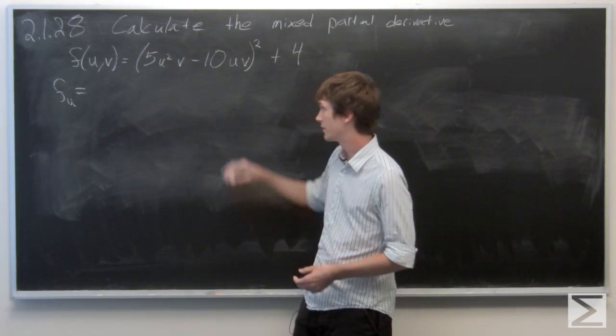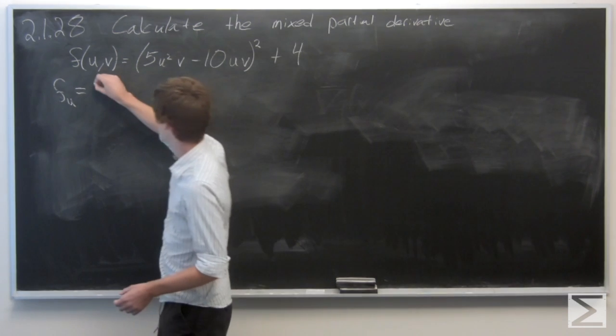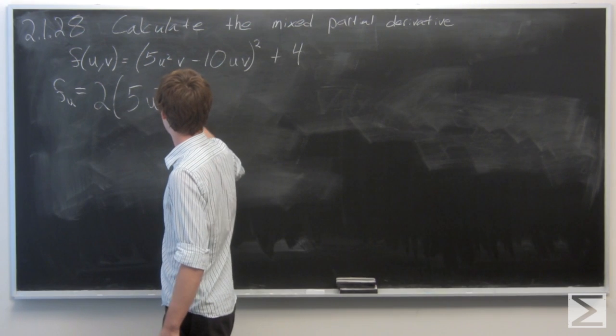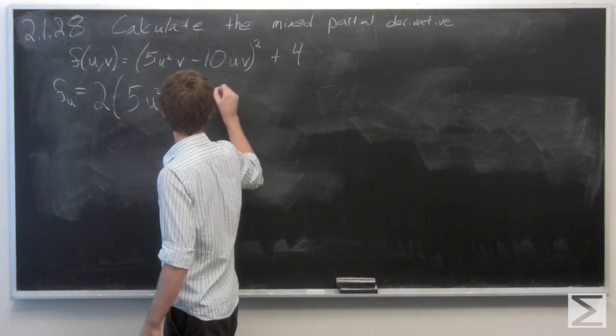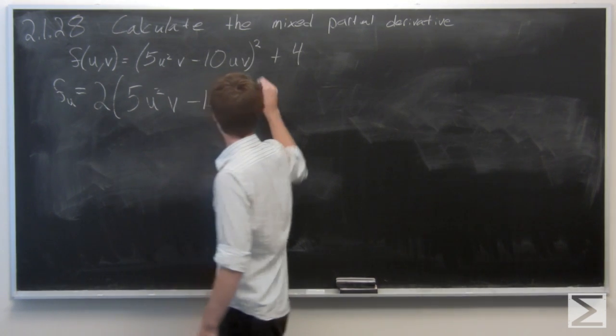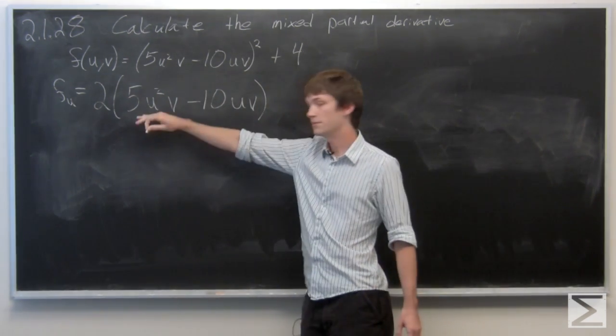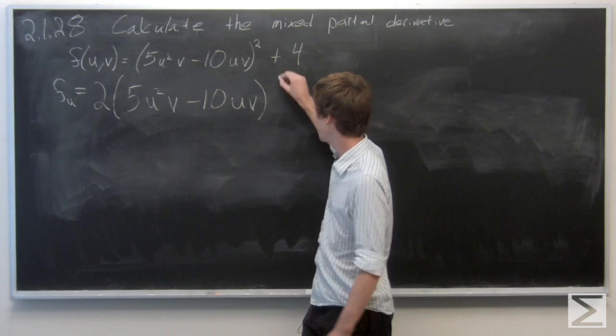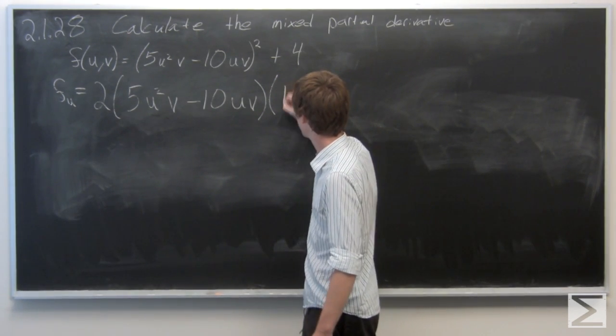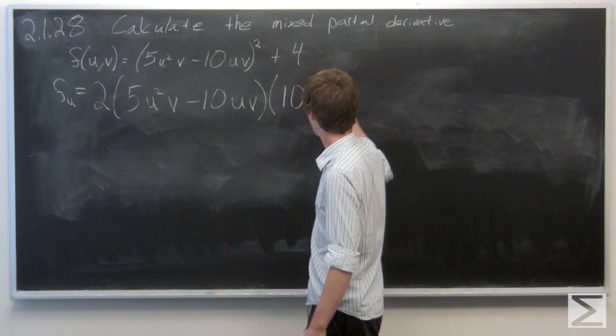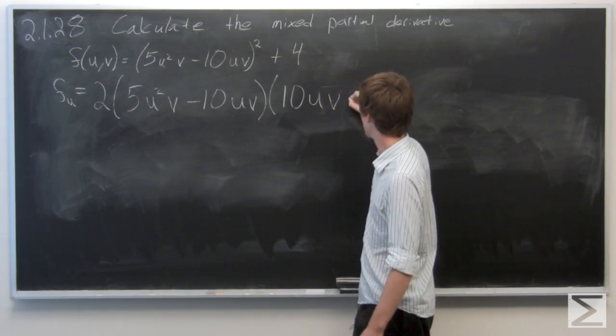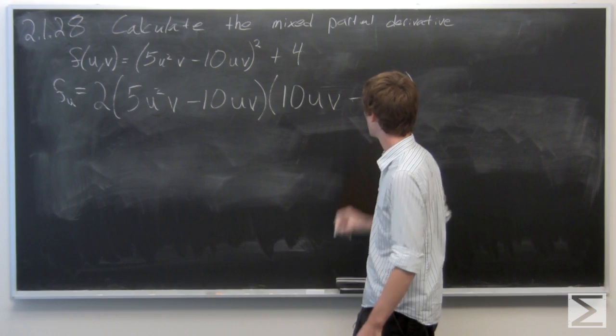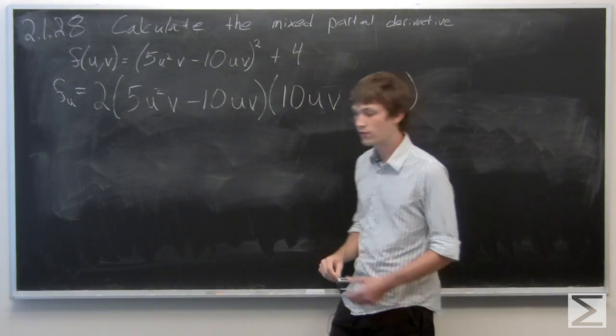So if we take the partial derivative with respect to u, we get times the partial derivative of u of the inside. And then the derivative of 4 is just 0.